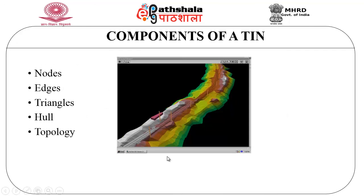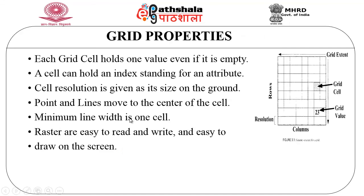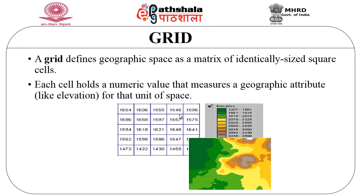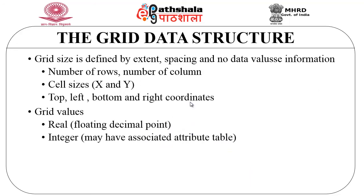This is an example of a triangulated irregular network. The various components are nodes, edges, triangles, hull, and the topology. A grid also has its own properties. Each grid cell holds one value even if it is an empty cell. A cell can hold an index value standing for a particular attribute. The cell resolution is given as its size on the ground. Points and lines move to the center of the cell. Minimum line width is one cell and raster are easy to read and write and easy to draw on screen. A grid defines geographical space as a matrix of identically sized square cells. Each cell holds a numeric value measuring a geographical attribute, like elevation for that unit of space. The grid data structure is defined by extent, spacing, no-data value information, number of rows and columns, cell sizes, top-left-bottom-right coordinates, and grid values — real and integer.